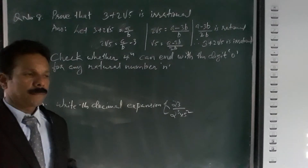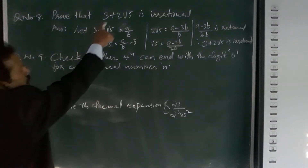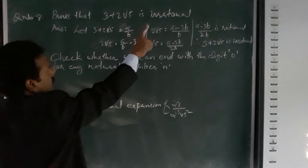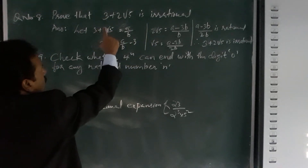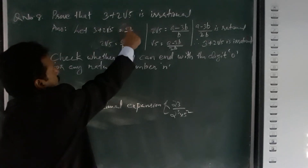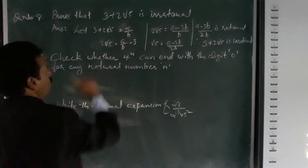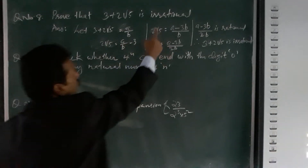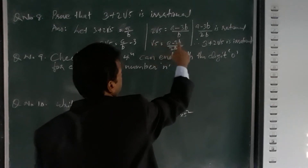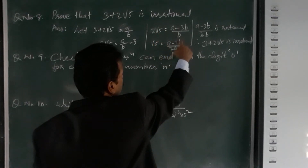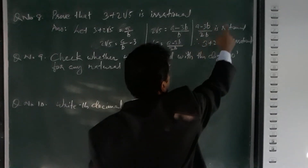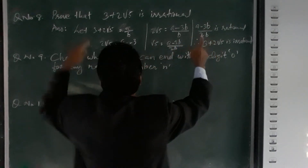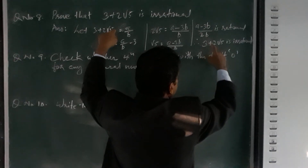Question number seven: prove that 3 + 2√5 is irrational. We know that the sum of a rational and an irrational number is always irrational. Assume 3 + 2√5 is rational, equal to a/b. Then 2√5 = a/b − 3 = (a − 3b)/b, so √5 = (a − 3b)/(2b). But (a − 3b)/(2b) is rational while √5 is irrational — contradiction. Therefore 3 + 2√5 is irrational.